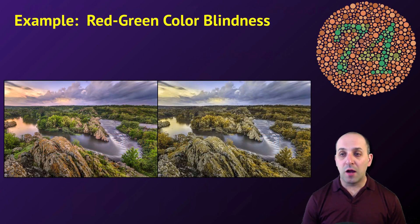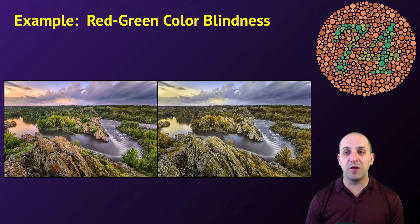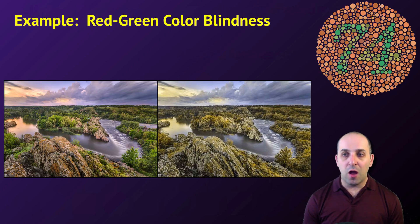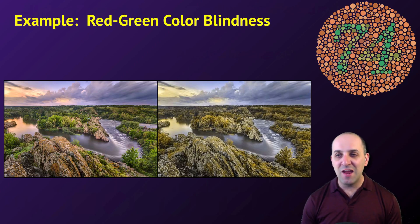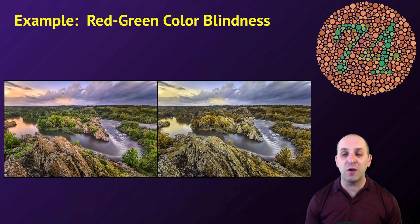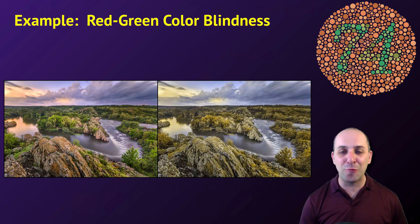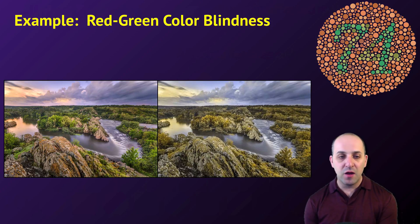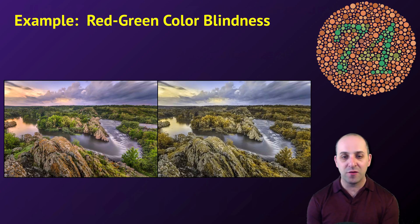Our example for an X-linked condition is red-green colorblindness. There's a colorblindness test shown here where it is very difficult for people with red-green colorblindness to see the numbers inside the circle. If you can't see numbers, check your screen resolution before concluding you have colorblindness — this is not a diagnostic video, so please consult your medical personnel of choice. We also see two pictures, where the one on the right has been simulated so those without red-green colorblindness can get some sense of what the world looks like with the condition.